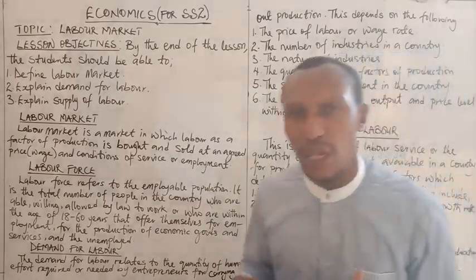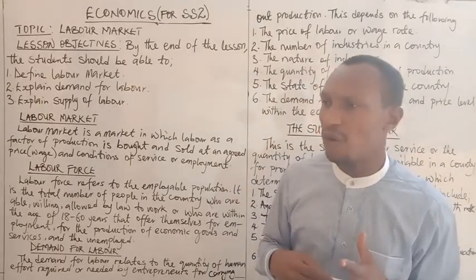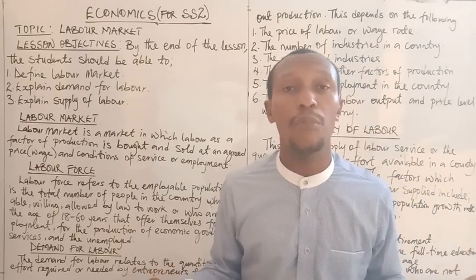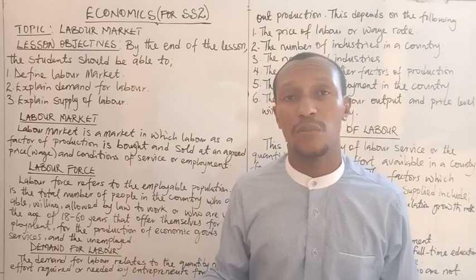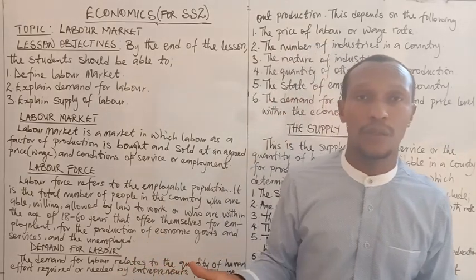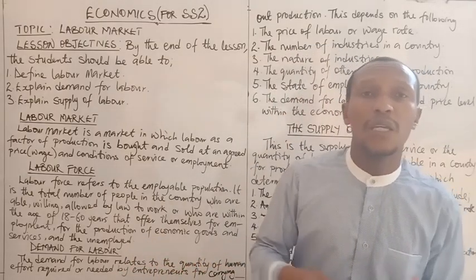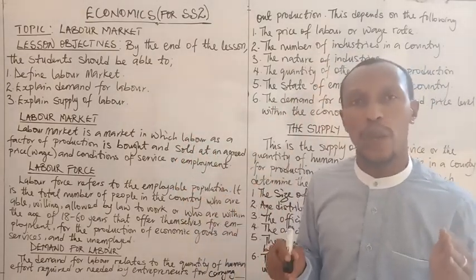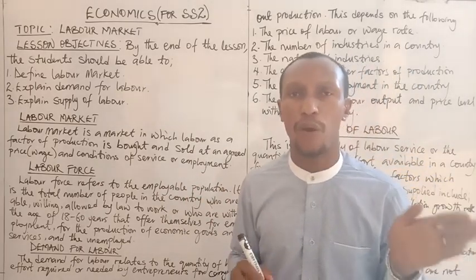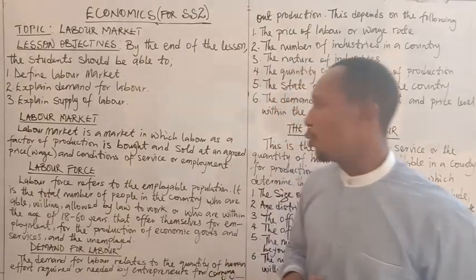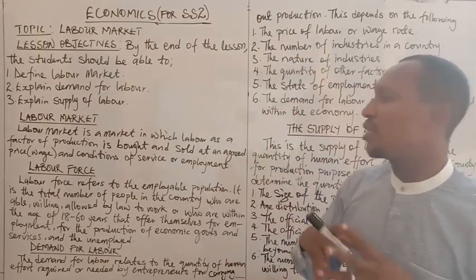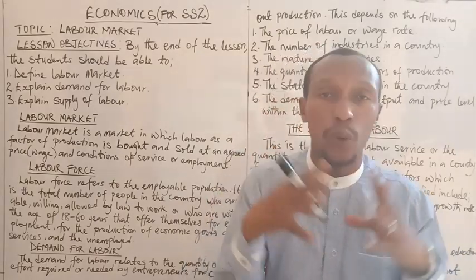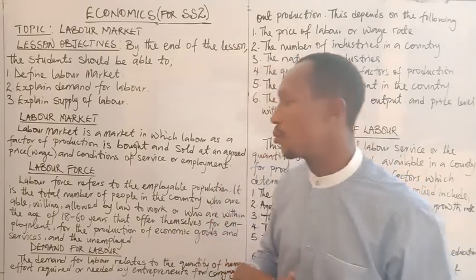Also, children — say a child of 15 or 16 years — may be willing and physically able to work one or two kinds of jobs, but they are not allowed by the law to work. That is where child labor comes into play. So the labor force consists of those within the age bracket of 18 to 60 years who are able, willing, and allowed by law to work.